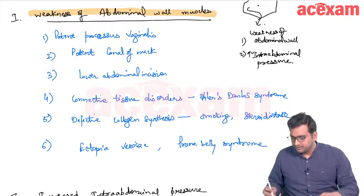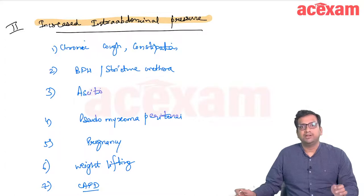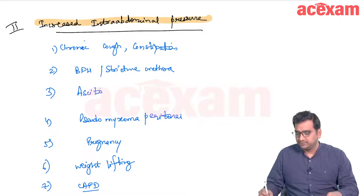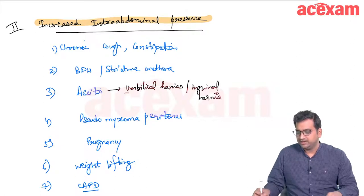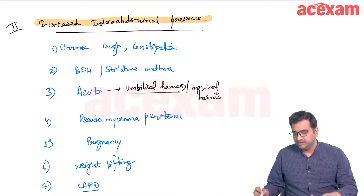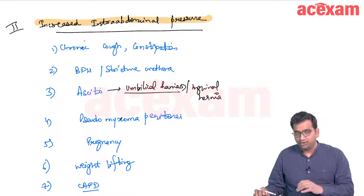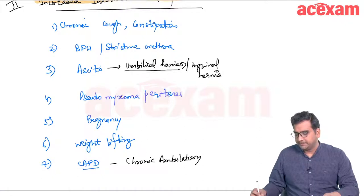Increased intra-abdominal pressure can result from chronic cough, constipation, prostatic problems or stricture urethra, ascites — which commonly leads to umbilical and inguinal hernias — pseudomyxoma peritonei, pregnancy, heavy weight lifting, or CAPD (chronic ambulatory peritoneal dialysis).